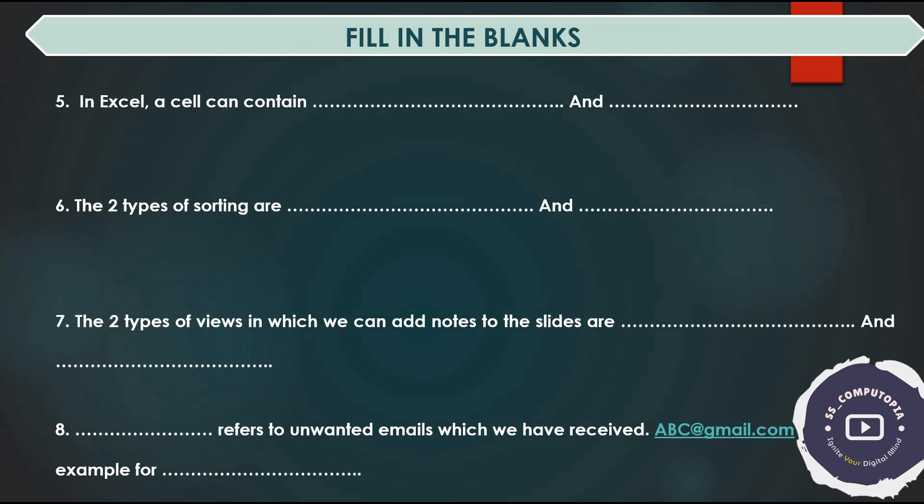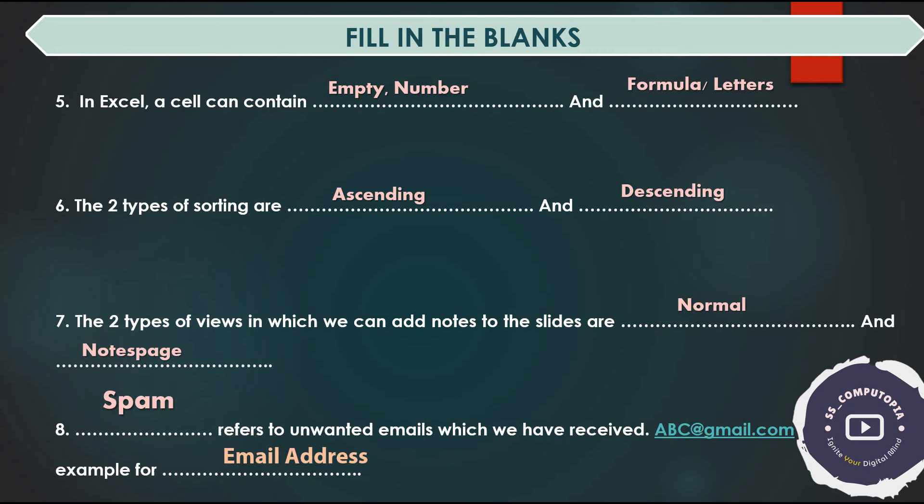Dash refers to unwanted emails we receive — and abc.gmail.com is an example of dash. An Excel cell can be empty, or contain a number, letters, or a formula. Two types of sorting are ascending and descending.